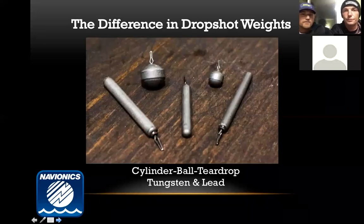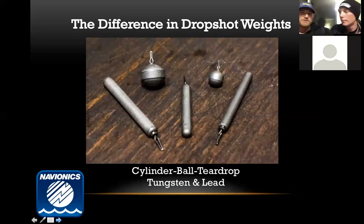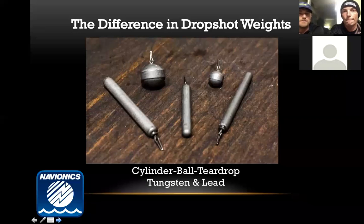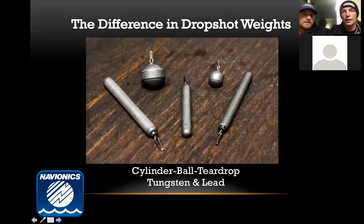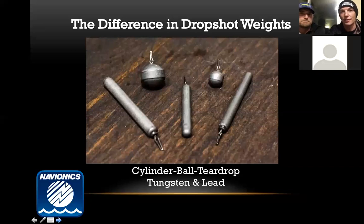For drop shot weights, you can start with tungsten or lead. You don't always need tungsten, but it does give you a lot more feel — you can feel bottom changes a lot differently. If your budget fits tungsten, I'd use it. As far as types, I typically use a cylinder style for most of my smallmouth fishing. The ball style shines for bed fishing because the sinker gets caught up a little more — in a bed there's something stickier or rocky where you can get that sinker wedged and keep your bait in the same place.